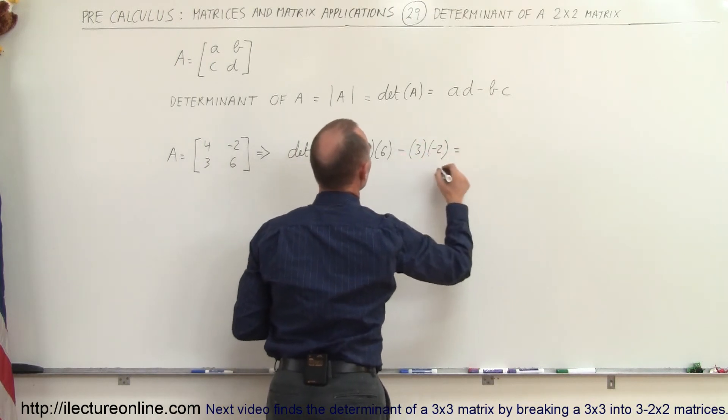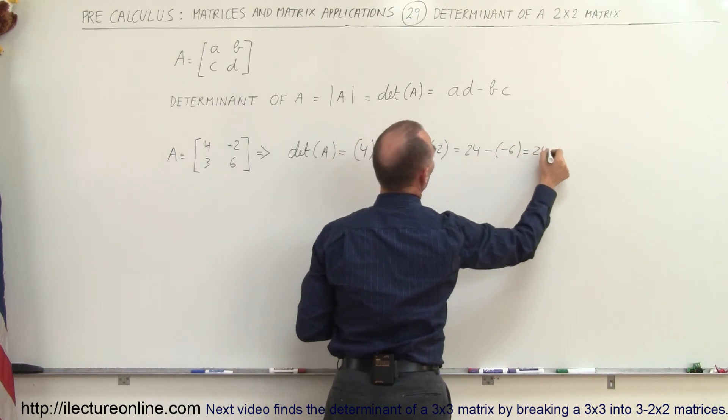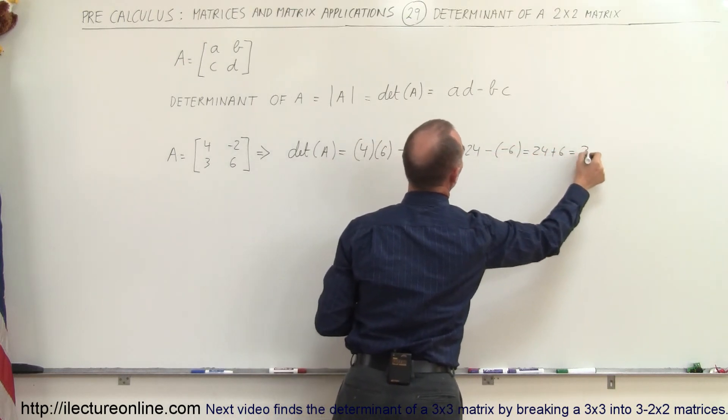And so this would become equal to 24 minus a minus 6, which is 24 plus 6, which is equal to 30.